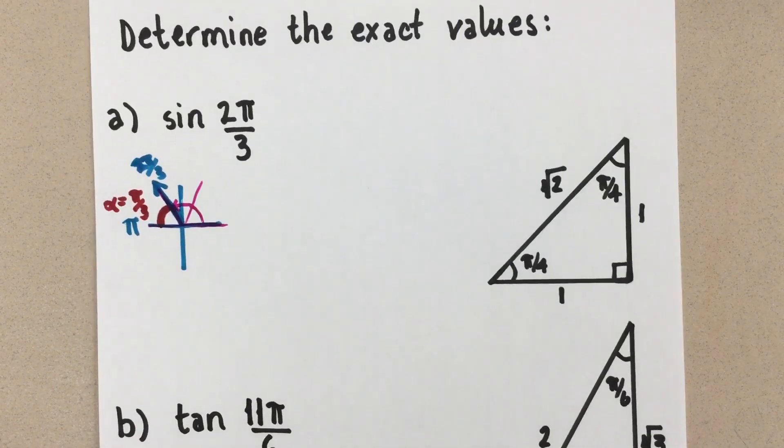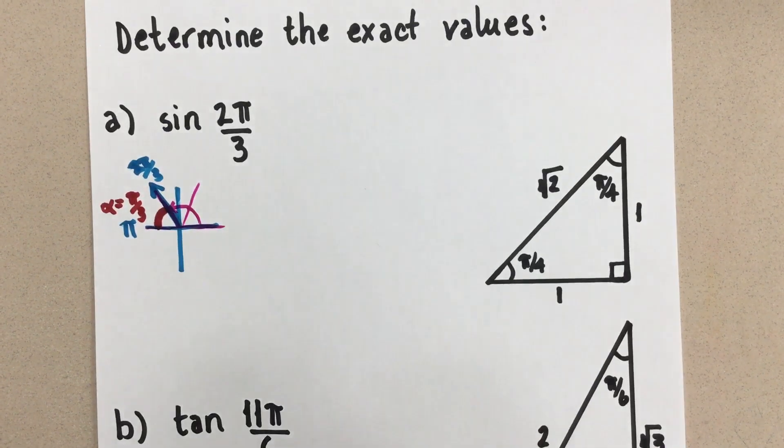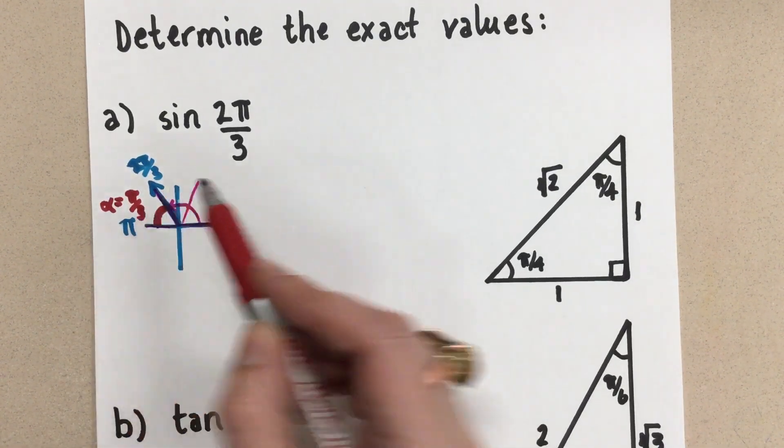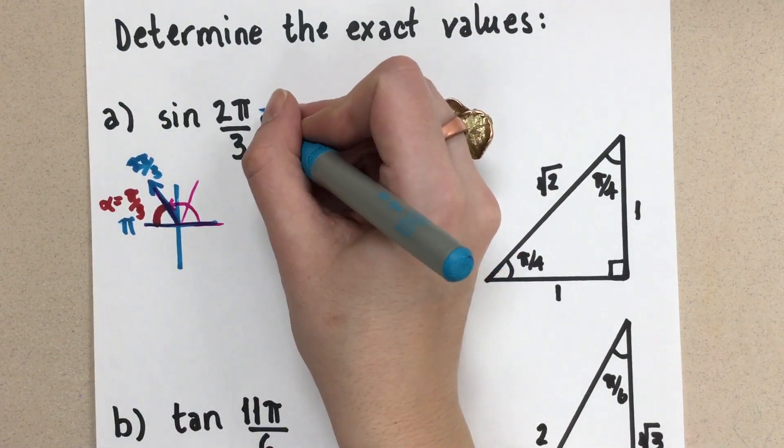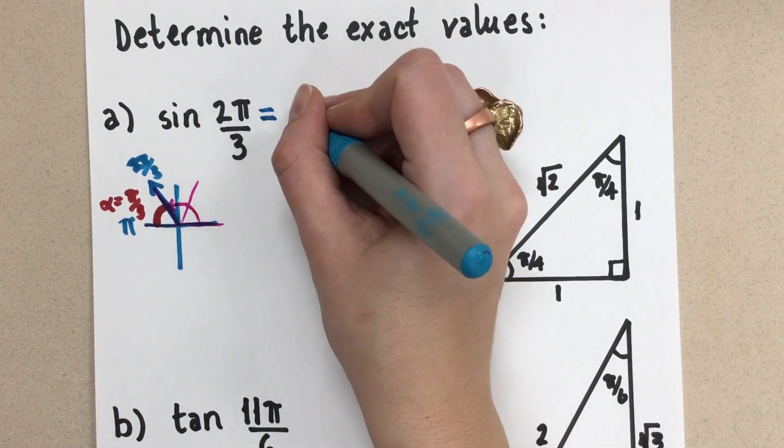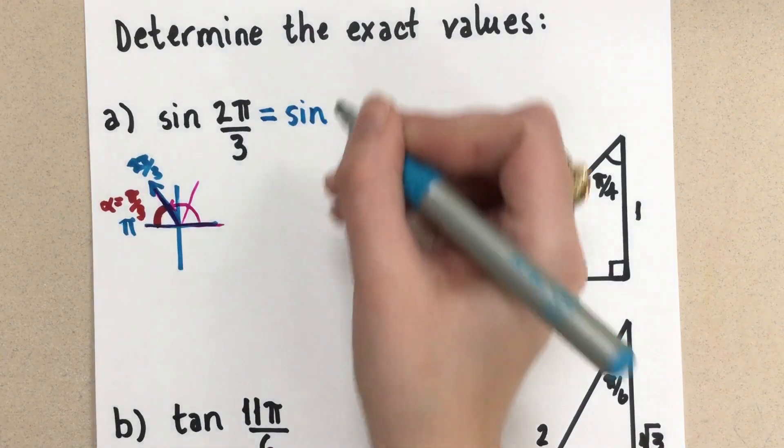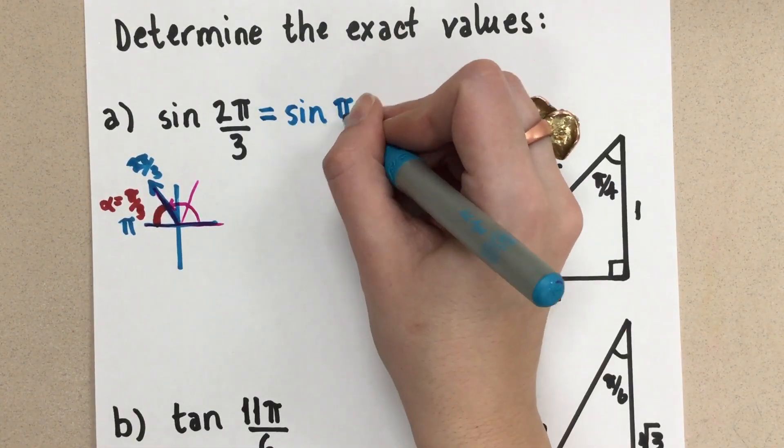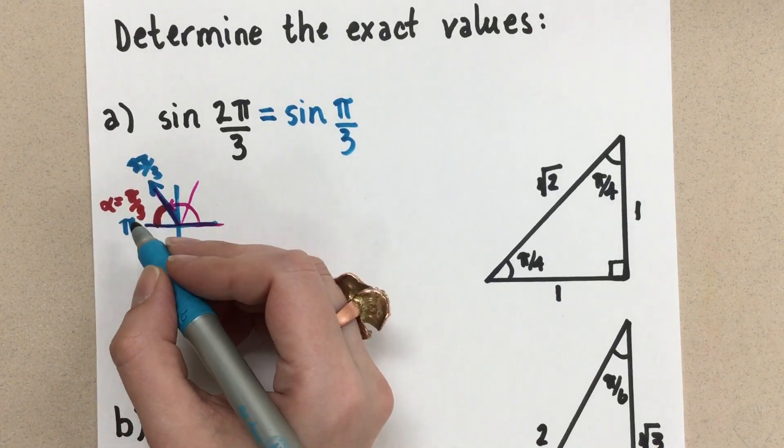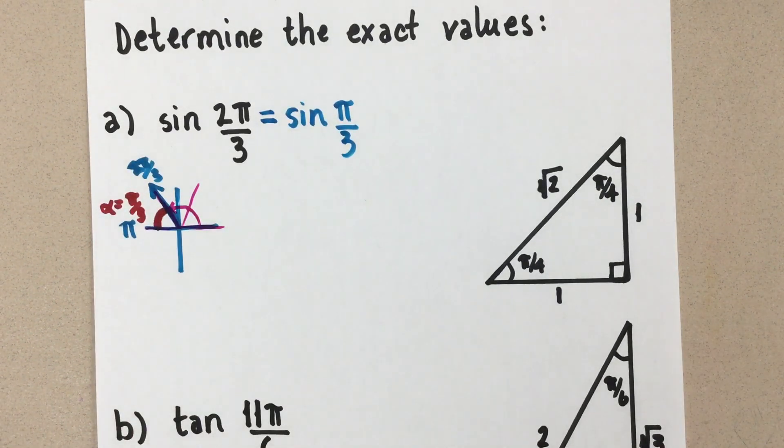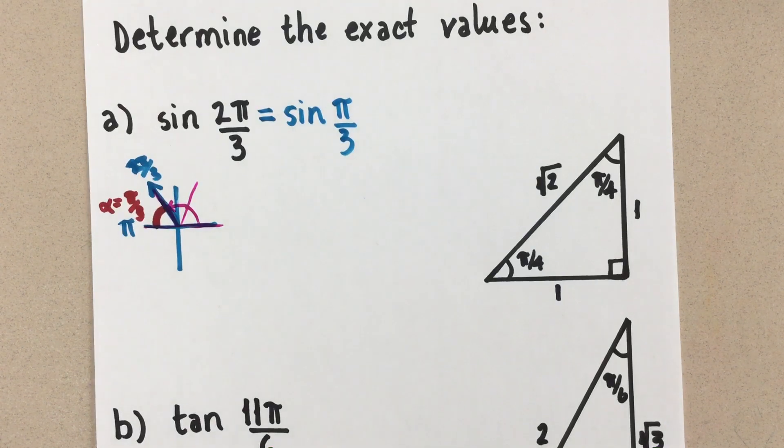So this related acute angle, I'm going to write as π over 3. That's 1 third of a π. So now to get the exact value for this sine value here, what I'm really going to look at is sine of the related acute angle, so sine of π over 3 in the second quadrant. Now in the second quadrant is important for positive and negative values. We'll look at the cast rule at the end.